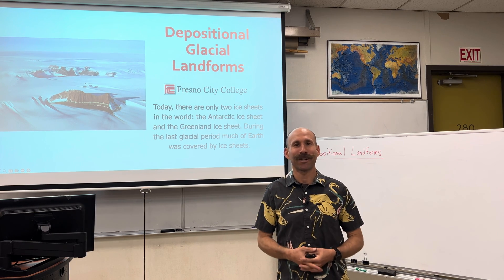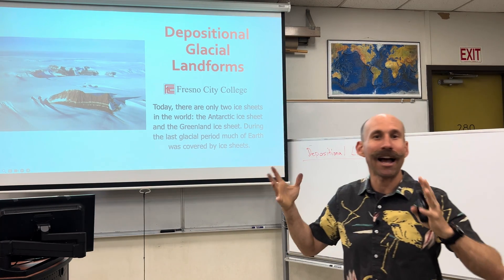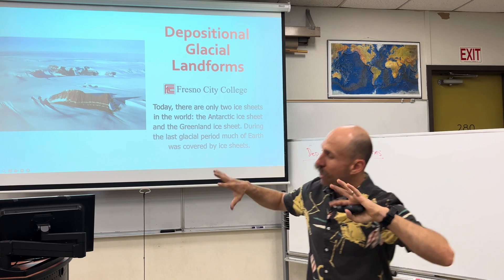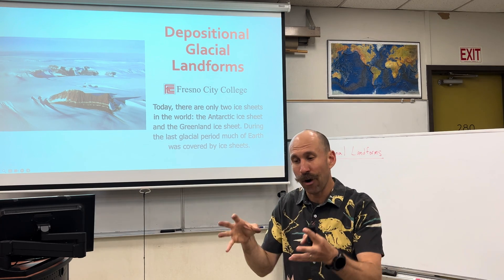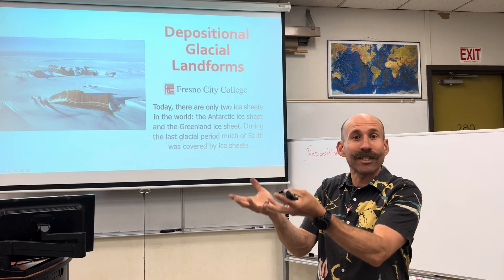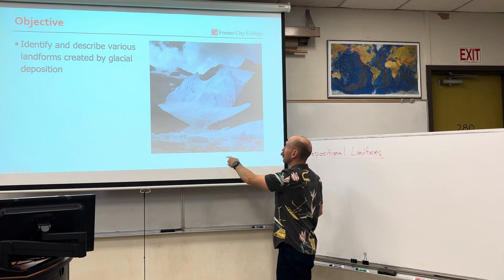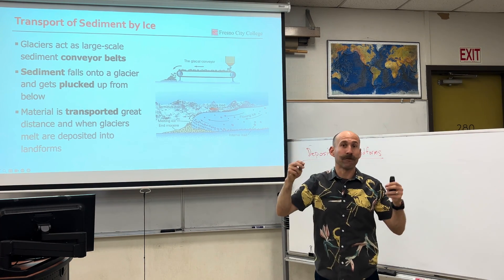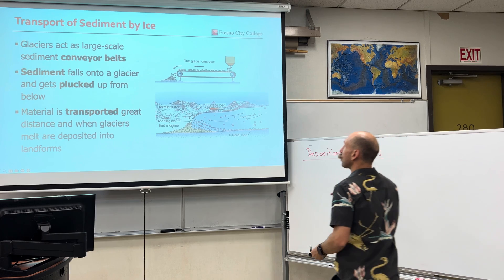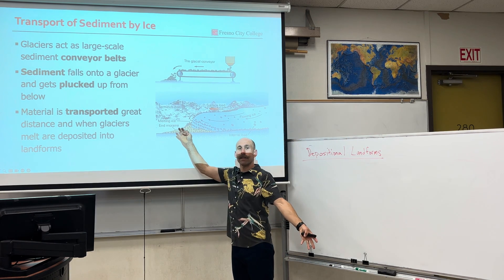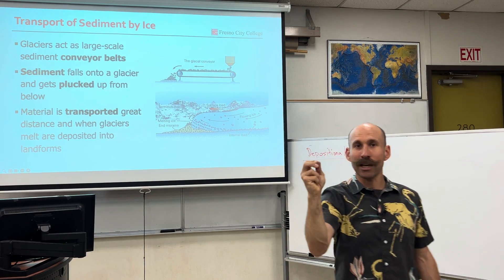Hello scholars, welcome — Mr. Hinkle here to talk about depositional glacial landforms. Glaciers are rivers of ice that travel across the landscape and as they do they carve out specific features called erosional features. But as they're carving the landscape they pick up sediment and then deposit that sediment to create depositional features. Glaciers are powerful agents of erosion — like conveyor belts that pick up and pluck sediment from below, transport it great distances, and then when they melt all that sediment deposits into specific unique landforms.